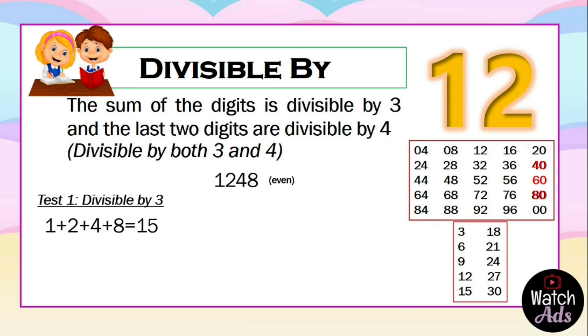We know that 15 is divisible by 3, which means it passed our first test. For our second test, it should be divisible by 4. We check the last two digits: 48. And 48 is divisible by 4.